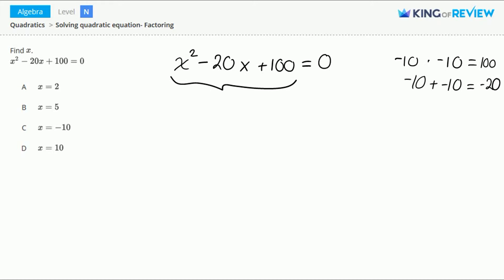So we can factor this as x minus 10 times x minus 10 equals 0, because negative 10 times negative 10 gives us the 100.